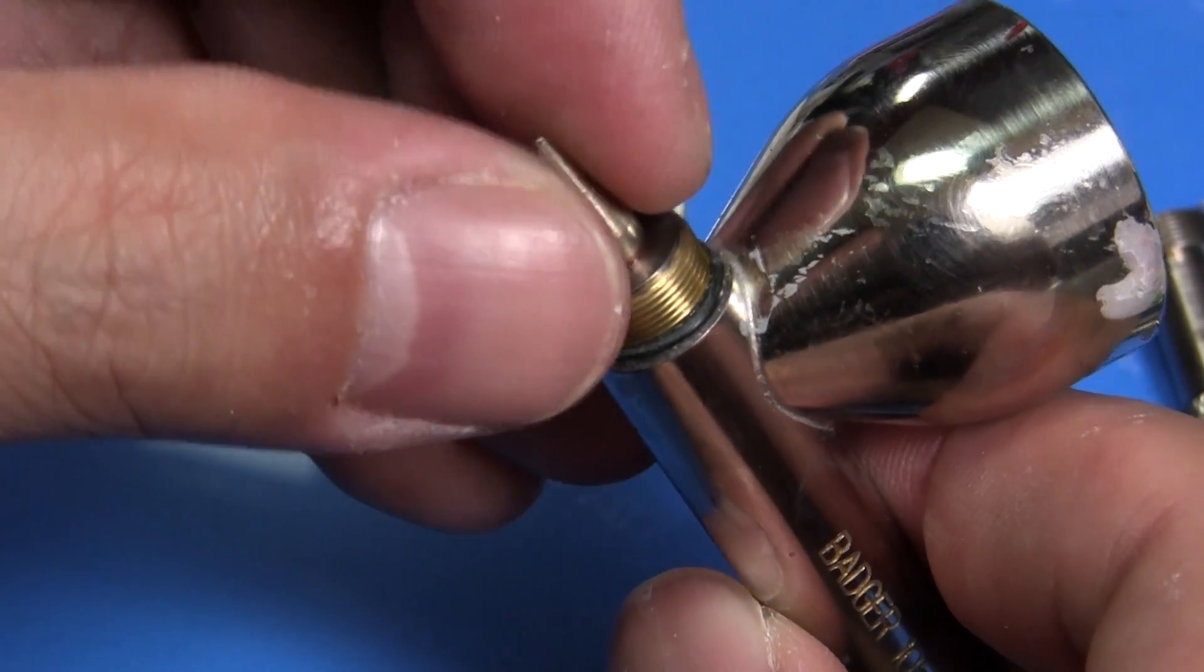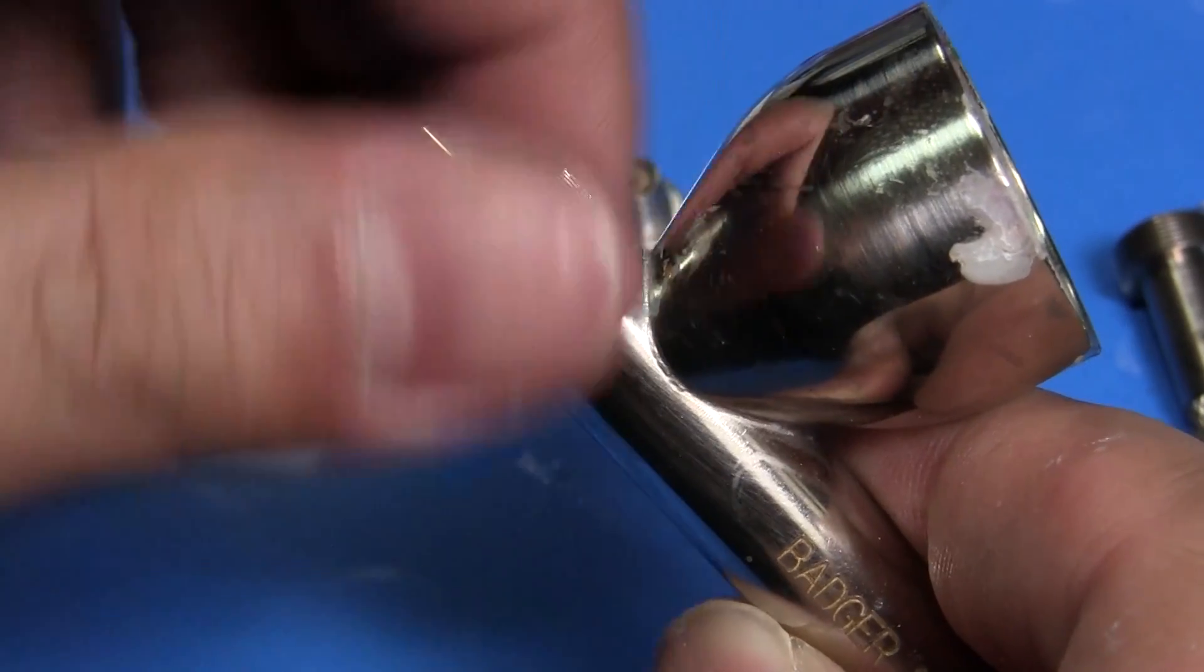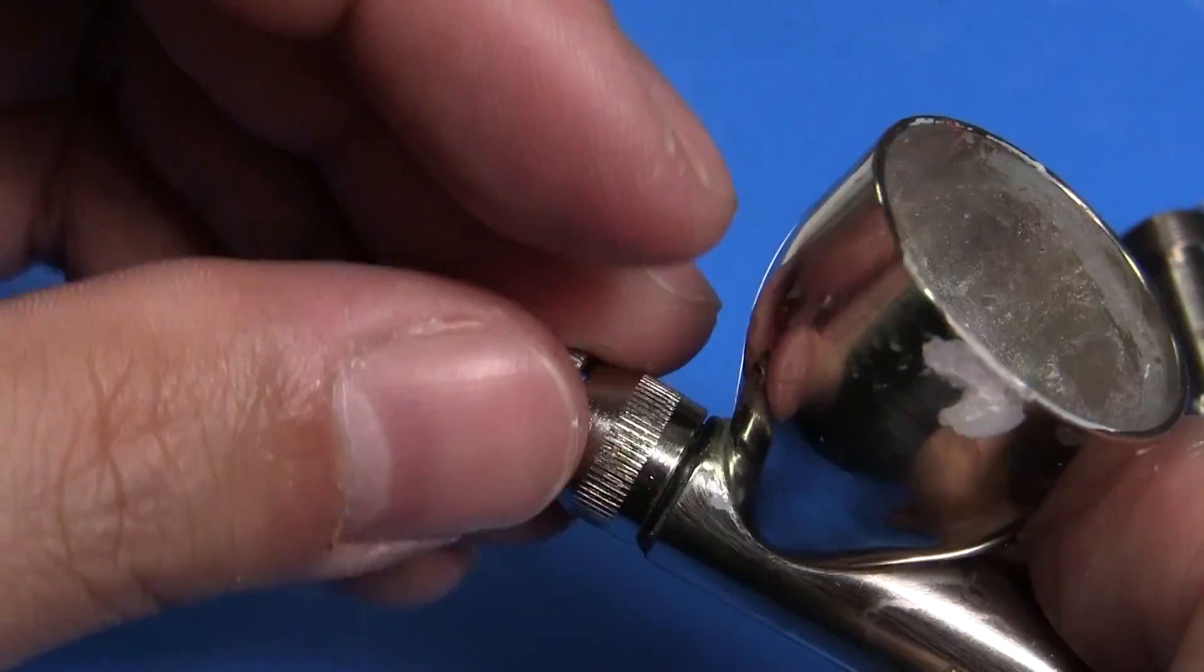Place the tip in the body. Carefully screw on the head. Then the spray regulator.